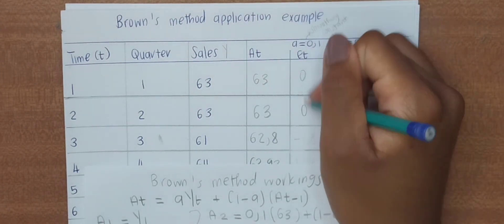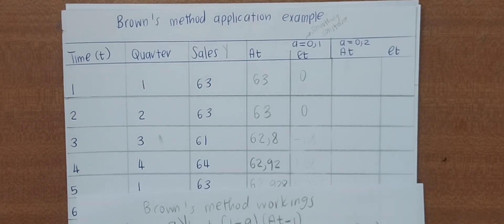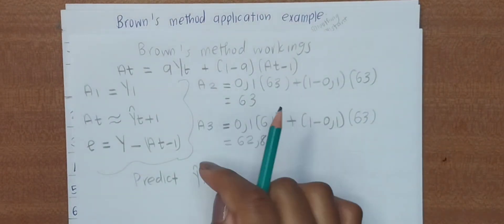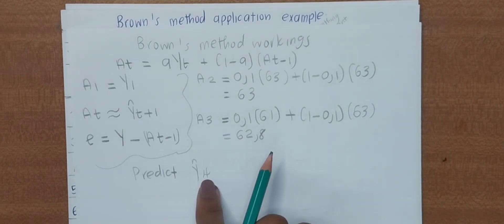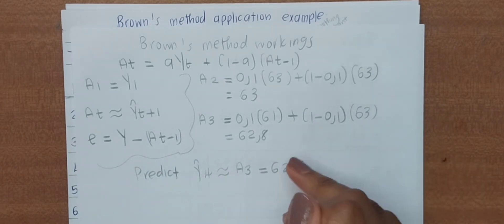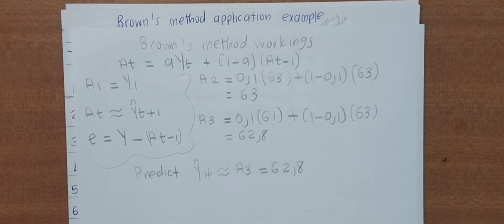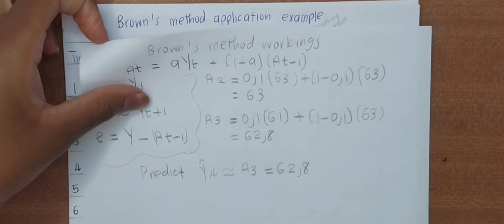Before we go to the error term, let's say a question asks you to predict Ŷ_4. If they ask you to predict the sales of time period 4, remember that A_t predicts Y_{t+1}, meaning that when I want the prediction of the sales at Y_4, I need to go to the previous A — I need to go to A_3. So Ŷ_4 equals A_3, which equals 62.8. This is very important: if they ask you to predict sales for time period 4, you do not calculate A_4; you use A_3 because A_3 predicts the next sale. A_4 predicts Y_5, A_5 predicts Y_6, and so on.